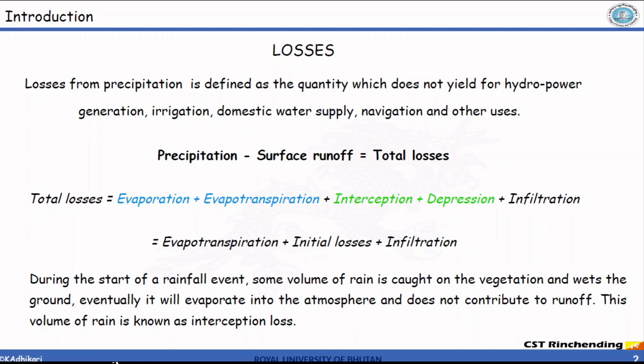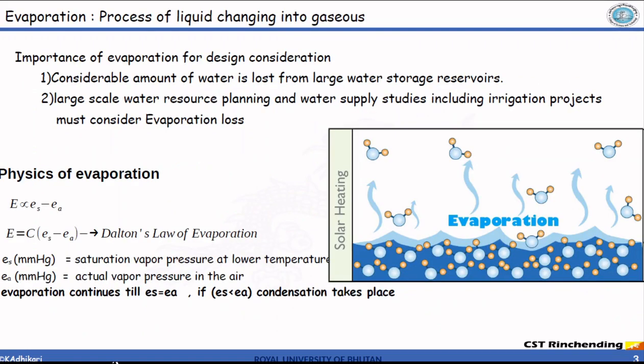Let's start with evaporation. Evaporation is a process by which liquid changes into gaseous form. The importance of evaporation in engineering is for design consideration, as a considerable amount of water is lost from large water reservoirs. Large-scale water resource planning and water supply studies, including irrigation projects, must consider evaporation losses.